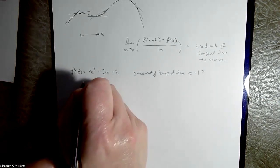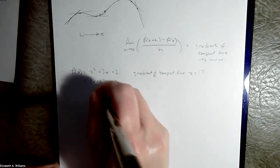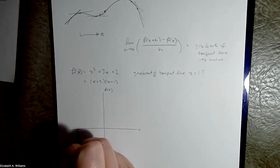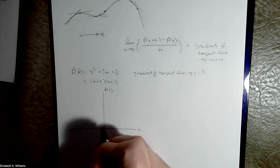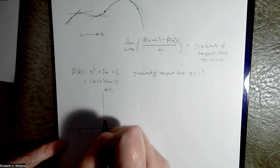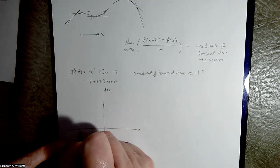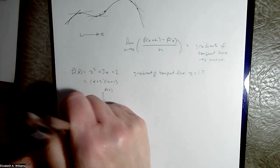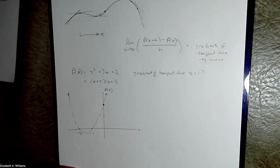So let's look at a specific example. Maybe f(x) = x² + 3x + 2, and maybe I want to know the gradient of the tangent line when x equals 1. This is nicely factorizable, which makes it easy to graph. So this quadratic is going to go through minus 2 and minus 1 and have a y-intercept of 2. I hope you're graphing along with me and not just watching me do it.